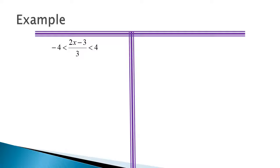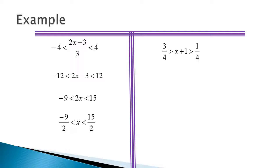Let's try another example — we have a double inequality here. You can split it up if you want to, but it goes much faster if you treat it like one problem. The first thing is multiplying all three parts — the left, the right, and the middle — by 3. Next, add 3 to all three parts, and then finally divide by 2. It looks a little strange because the inequality symbols are kind of reversed of what we're used to seeing, so we put it in order from least to greatest. We get negative 3 fourths is less than x, which is less than negative 1 fourth.